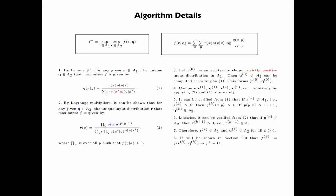It will be shown in Section 9.3 that f sub k, that is f(Rk, Qk), converges to f star, which is equal to C.